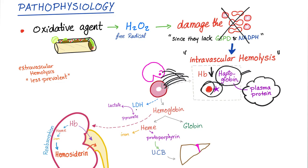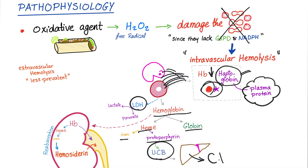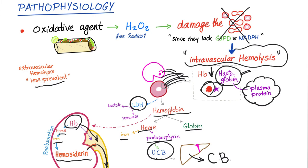Red blood cells contain a lot of the enzyme LDH, which converts lactate to pyruvate reversibly for ATP. The hemoglobin releases heme and globin; heme has iron and protoporphyrin. Protoporphyrin becomes unconjugated bilirubin, and the liver works hard to conjugate it. Hemoglobin goes to the kidney — the iron is converted into hemosiderin, leading to hemosiderinuria, and hemoglobin appears in the urine as hemoglobinuria. G6PD deficiency is mostly an intravascular hemolytic process, with only a little extravascular hemolysis.